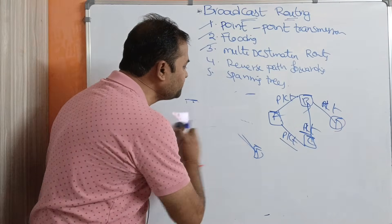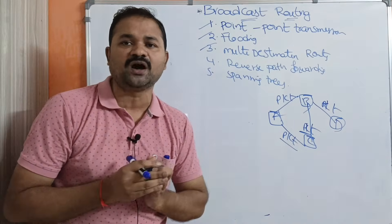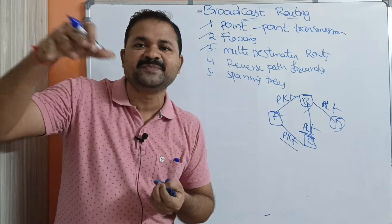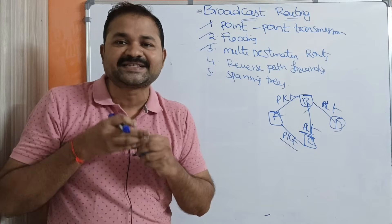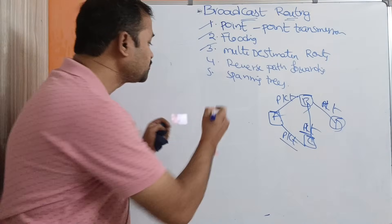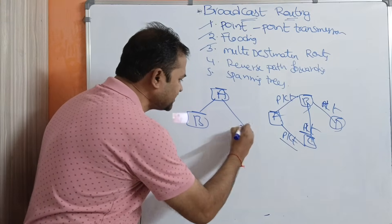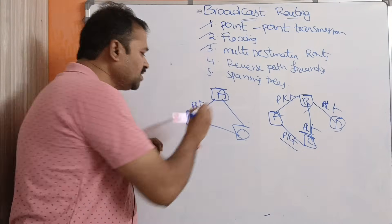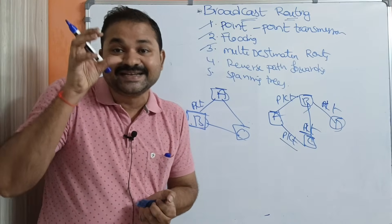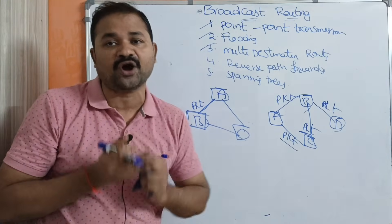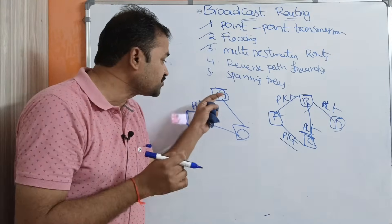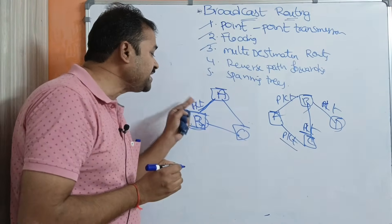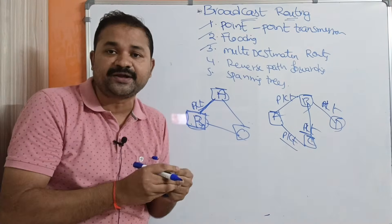Now let us see the next approach: reverse path forwarding. In reverse path forwarding, the flooding concept is also implemented. Let the graph contain routers A, B, and C. If router B receives a packet from router A, router B checks whether the path distance from the source is shorter. Here, A is the source, so this is the shorter path, and router B simply accepts this packet.